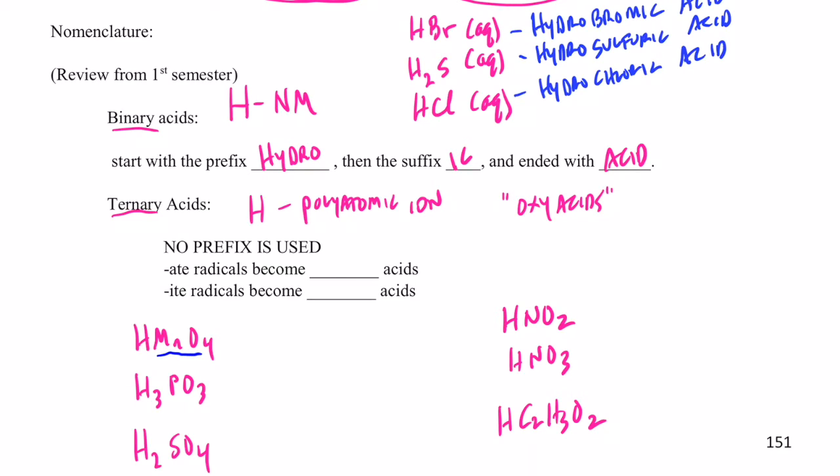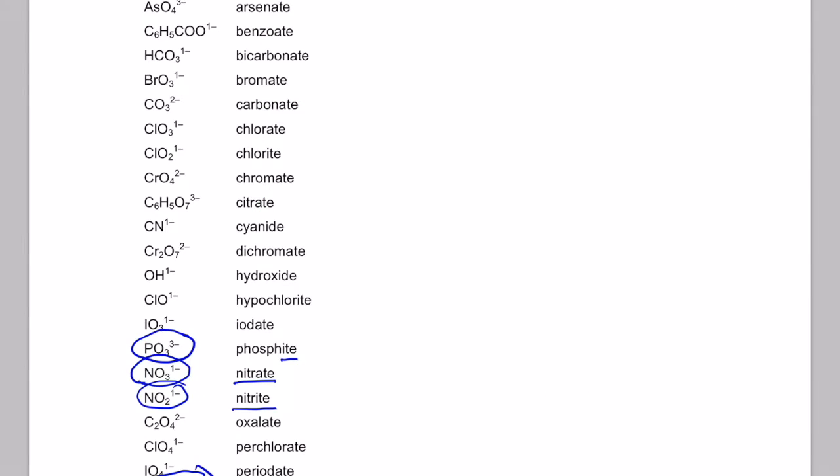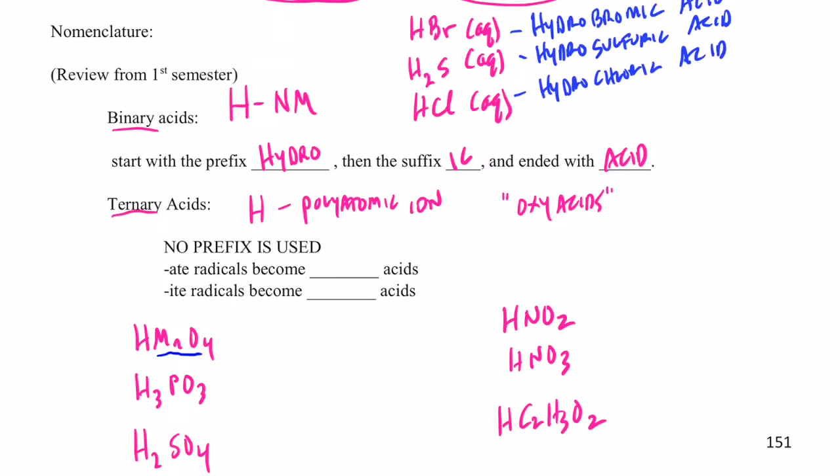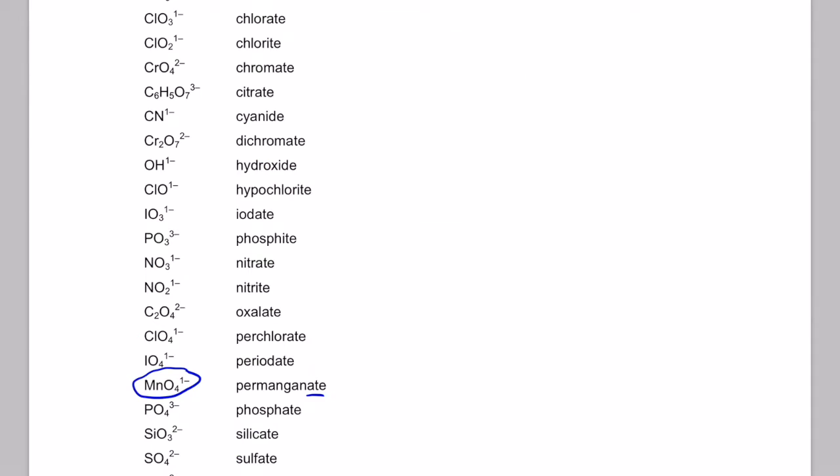So HMNO4, the oxygen containing polyatomic is MNO4. Let's go to our polyatomic chart. Let's clear this page so it looks a little bit better here. And let's find MNO4, negative one. There it is. It's called permanganate. So we change the ending. Eight to an ick acid. So if you remember, eight radicals are polyatomics. If they're bonded to hydrogen, become ick acids. So this should be called permanganic acid. And we do not start with the prefix hydro. Let's do H3PO3. Now PO3 is three negative. So let's find that on our polyatomic chart. So PO3, three negative. Here it is. It's called phosphite.